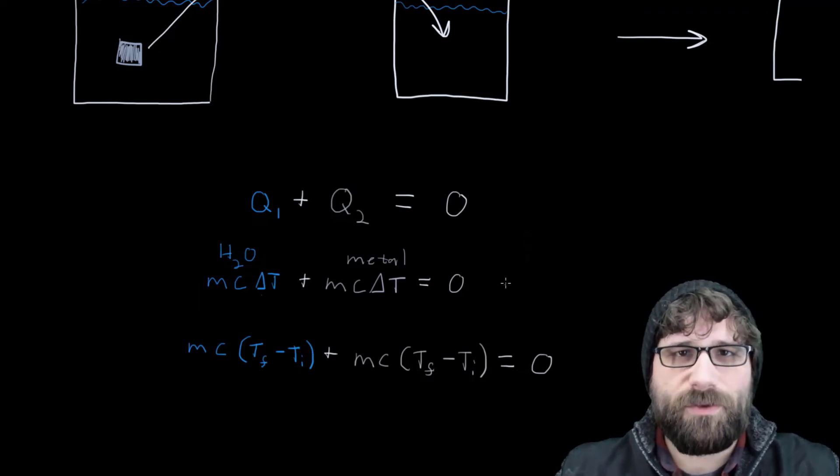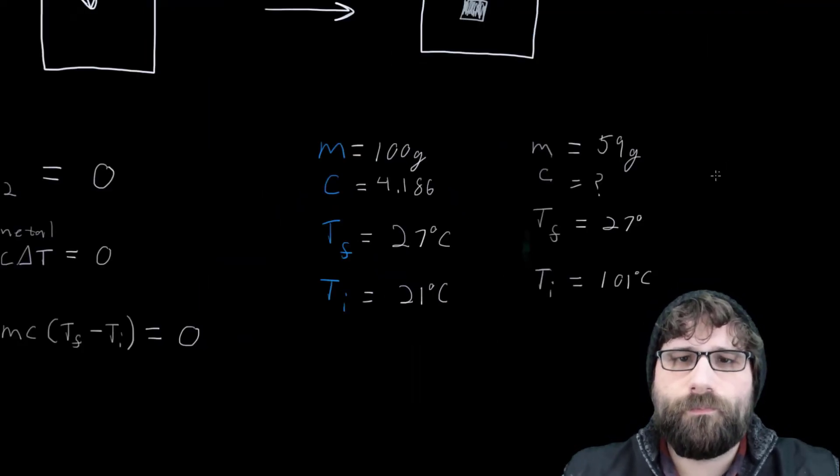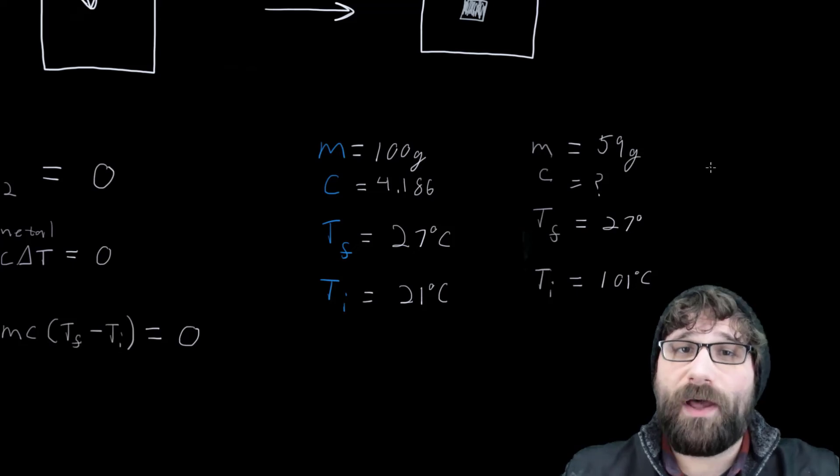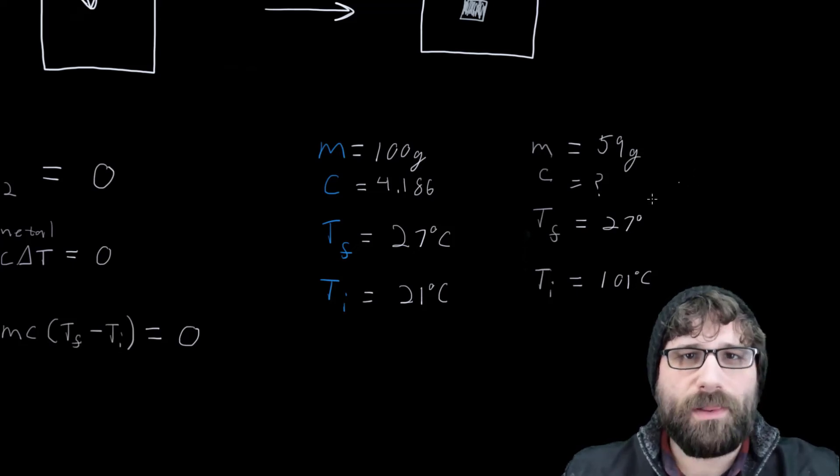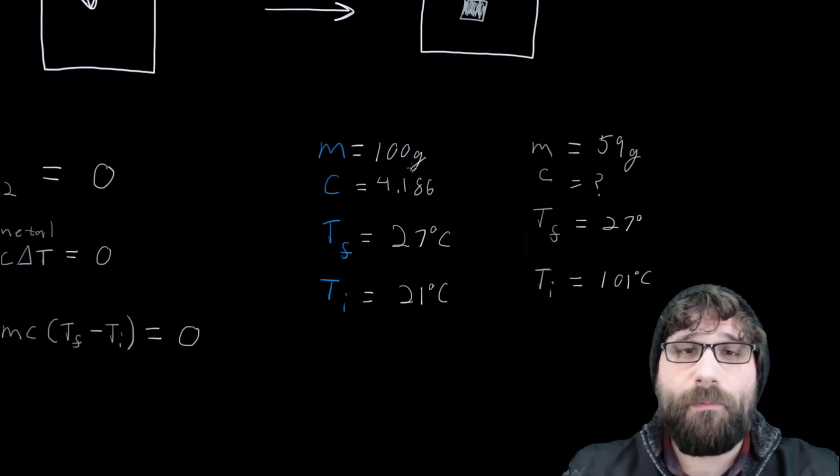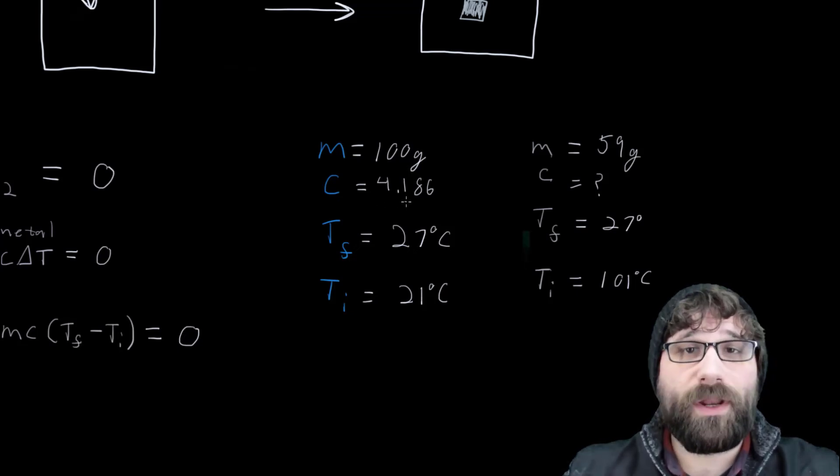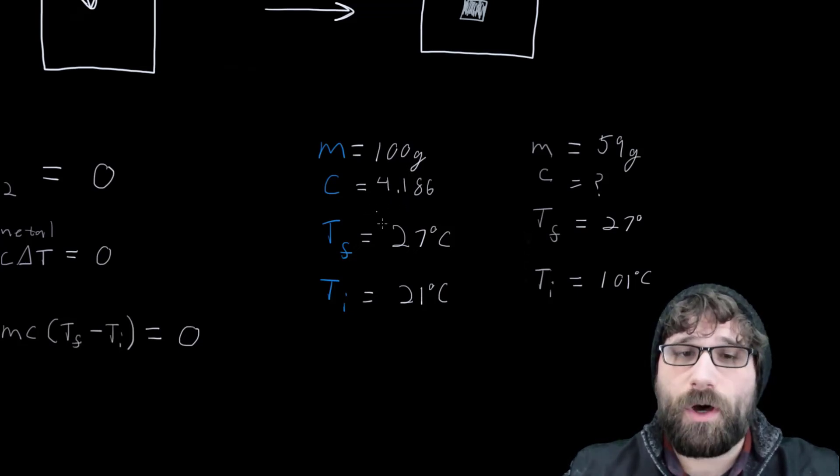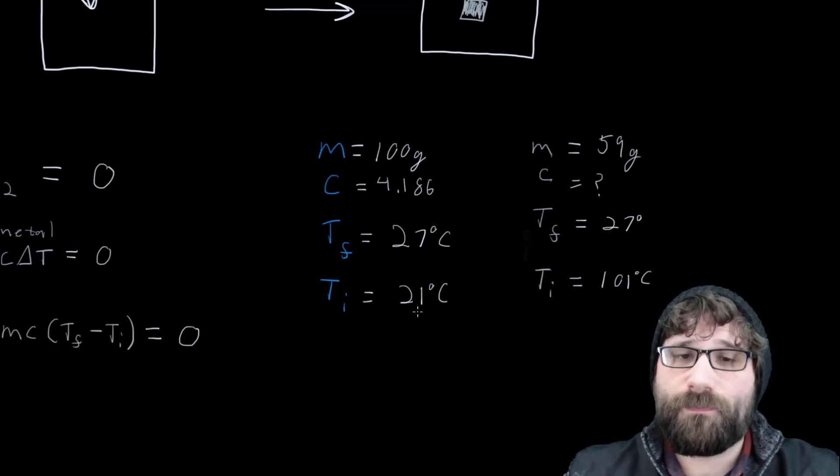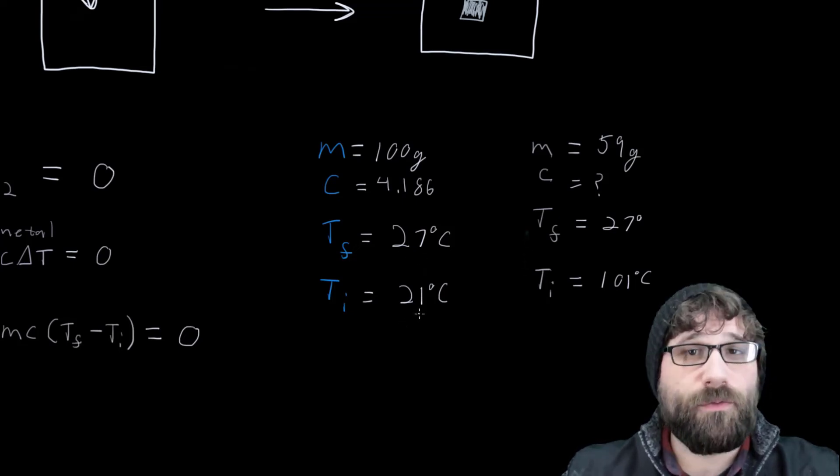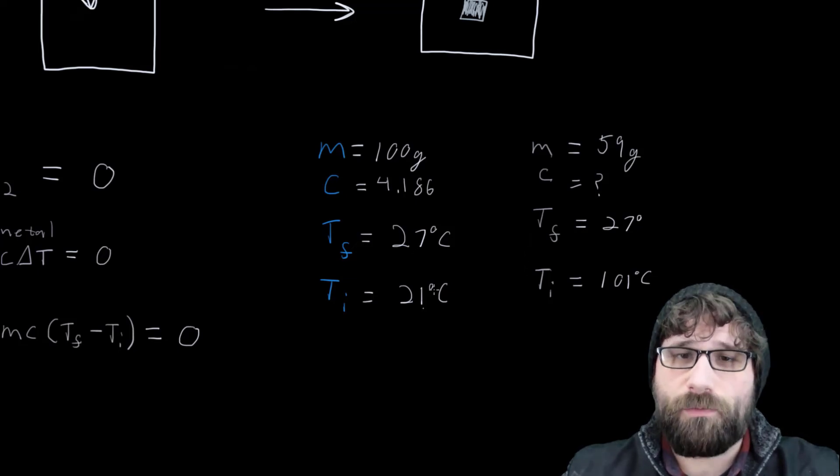Let's plug in some values. So here are all of my values that I measured from my lab. First, I've got 100 grams for my mass of water, I've got 4.186 for the specific heat of the water, and I've got the final temperature of the water being that 27 degrees. Now my initial temperature of the water was my room temperature, which was 21 degrees, I measured that.